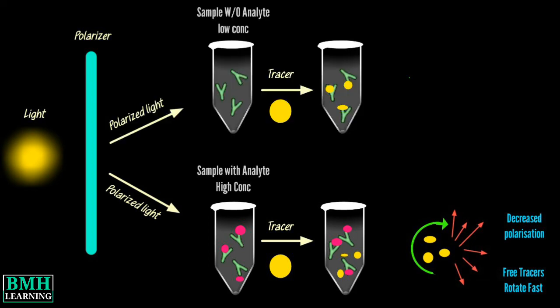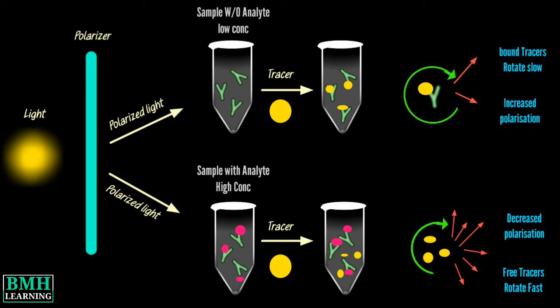However, when the tracer binds a much larger molecule, it rotates more slowly and the emitted light remains largely polarized. That was all. Thanks for watching.